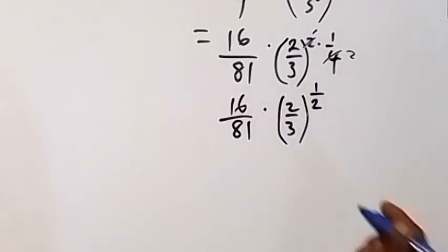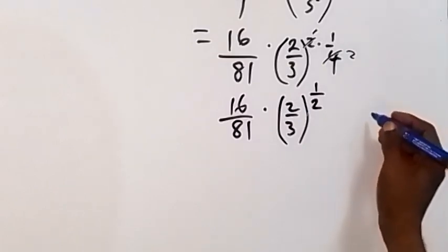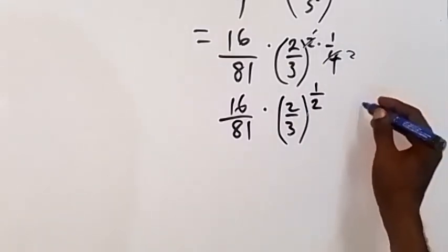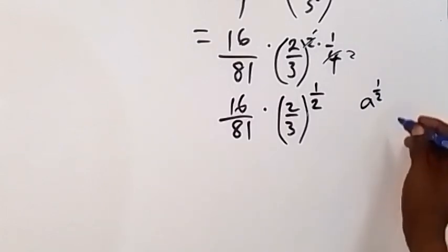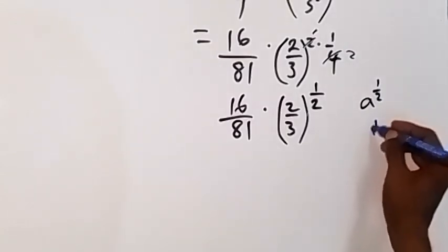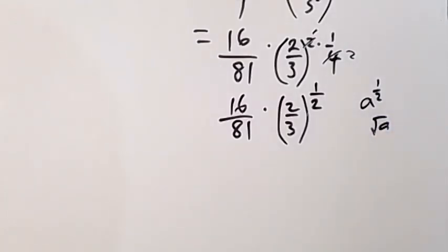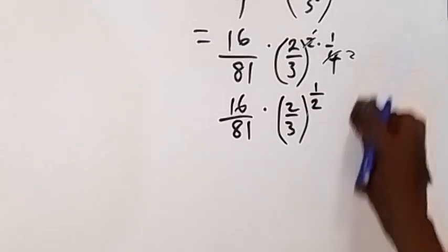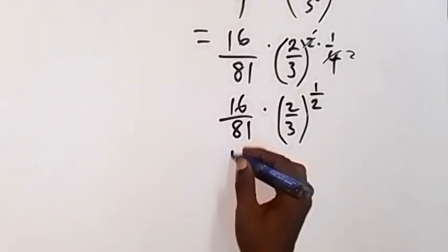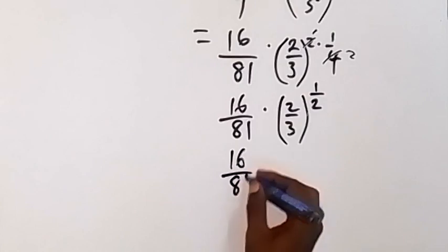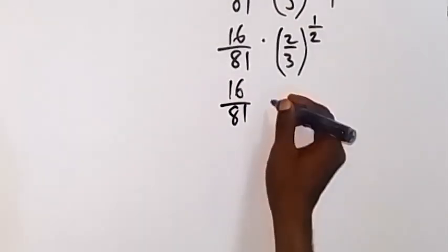And here when we have anything raised to power half, that's the same thing as square root of that. Like we have a raised to power half in the law of indices, this will be square root of a. So we can say this is square root of what we have and say this will be 16/81 multiplied by square root of everything here.